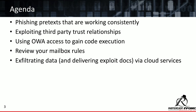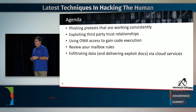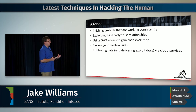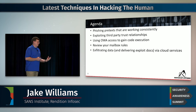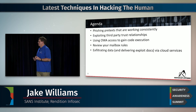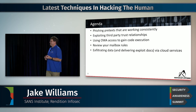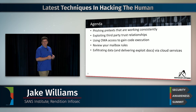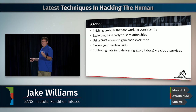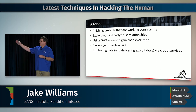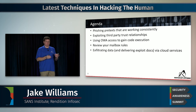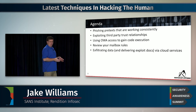For the agenda, I want to talk about phishing pretexts that work consistently. We do a lot of incident response, and one of the big things we deal with is phishing pretexts — what's getting the attackers in. I also want to talk about exploiting third-party trust relationships, and transitioning from web-based email access to inside-the-network access. Just from compromising web-based email, you get code execution inside the environment.